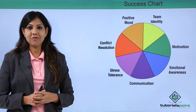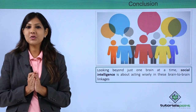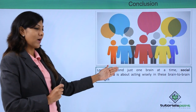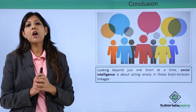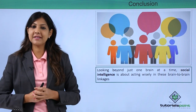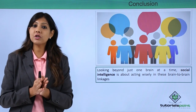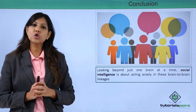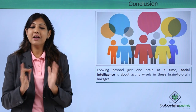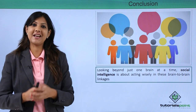That brings us to the end of this module on social intelligence. Looking beyond just one brain at a time, social intelligence is about acting wisely in these brain-to-brain linkages. Whenever we talk to people we connect in terms of neurons, energies, and vibrations. Always make sure you are connecting with people, going out there and showing love and care. Relationships need time — do not be hooked on social media talking to imaginary friends; get up, go out, and interact with people on a real-time basis.